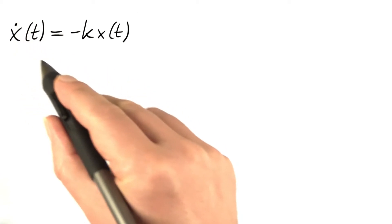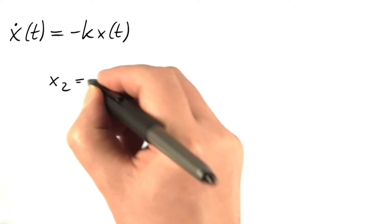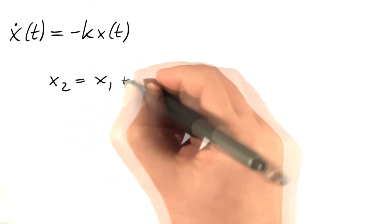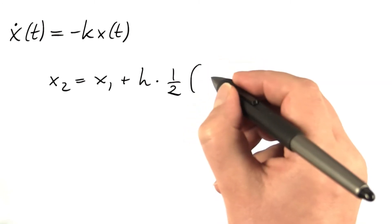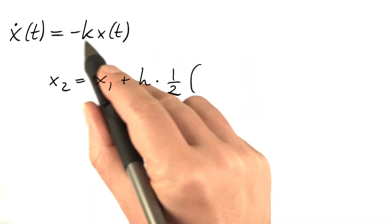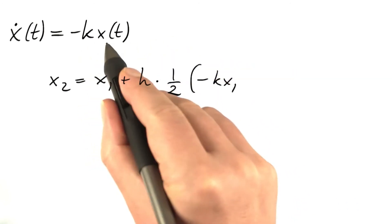The trapezoidal rule turns this differential equation into the following. The next value of x equals the current value of x plus the time step times the average of two rates of change, the current rate of change minus k x1, and the next rate of change minus k x2.